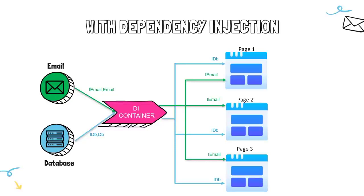In future, if you want to change or replace the email class, you do not have to make any changes in the pages. All you have to do is change the implementation inside the email class, and since we register that in the container, next time we build the project it will take the new implementation. You only have to change in one place — that is one of the main advantages of dependency injection. With .NET Core, we have a built-in dependency injection container, which has its own advantages.